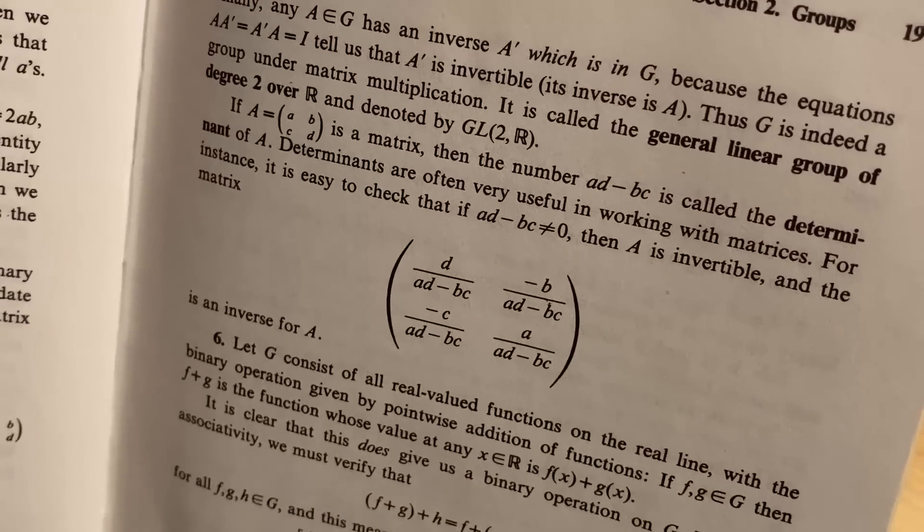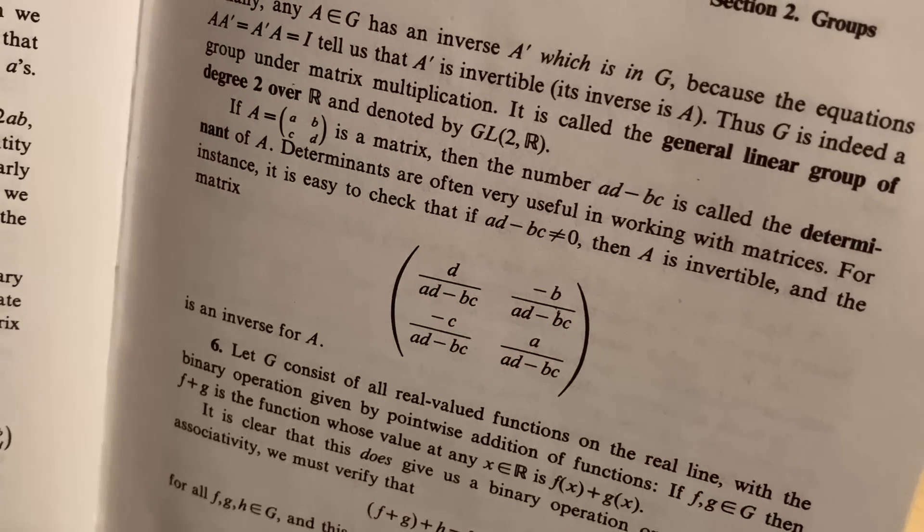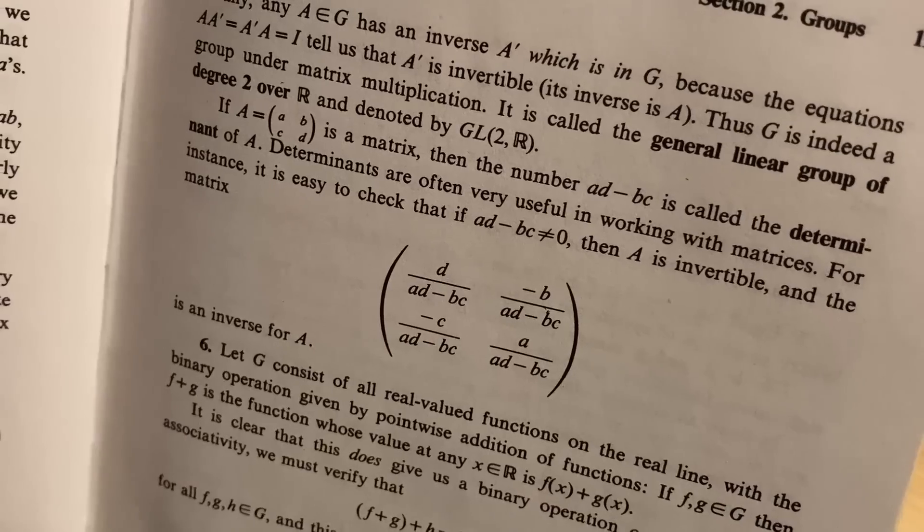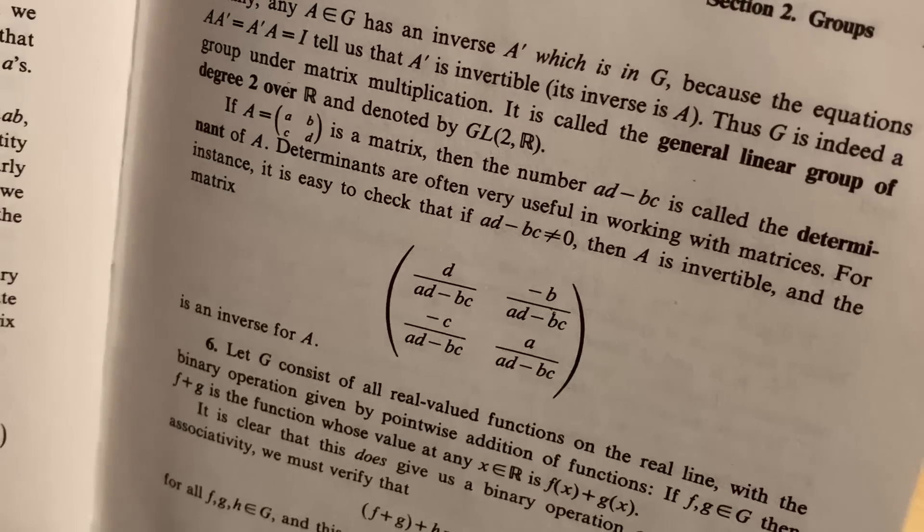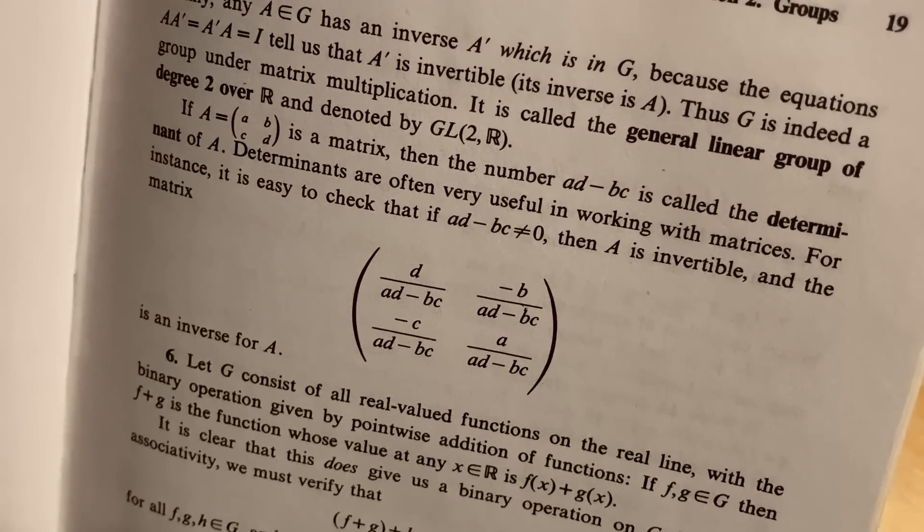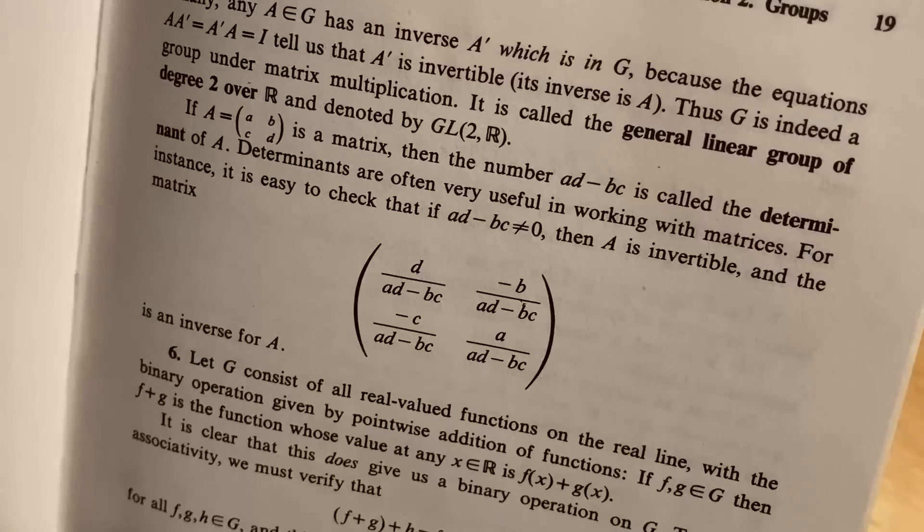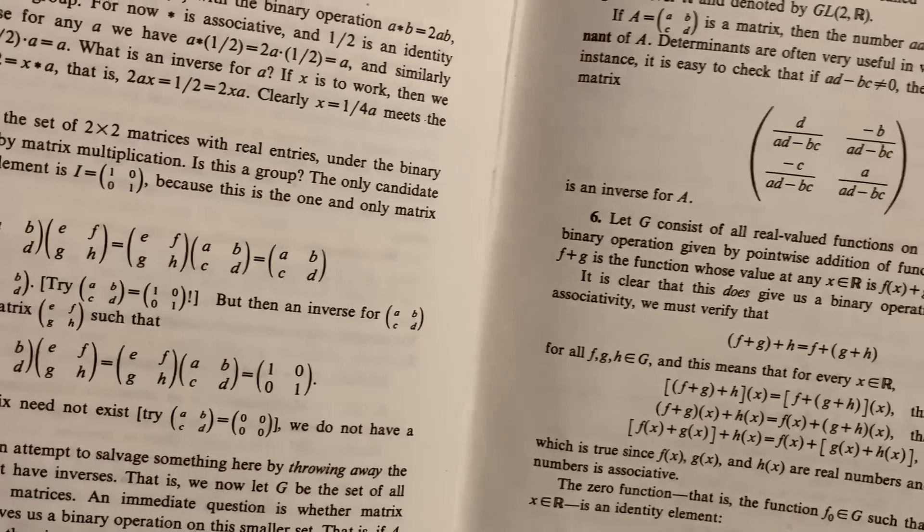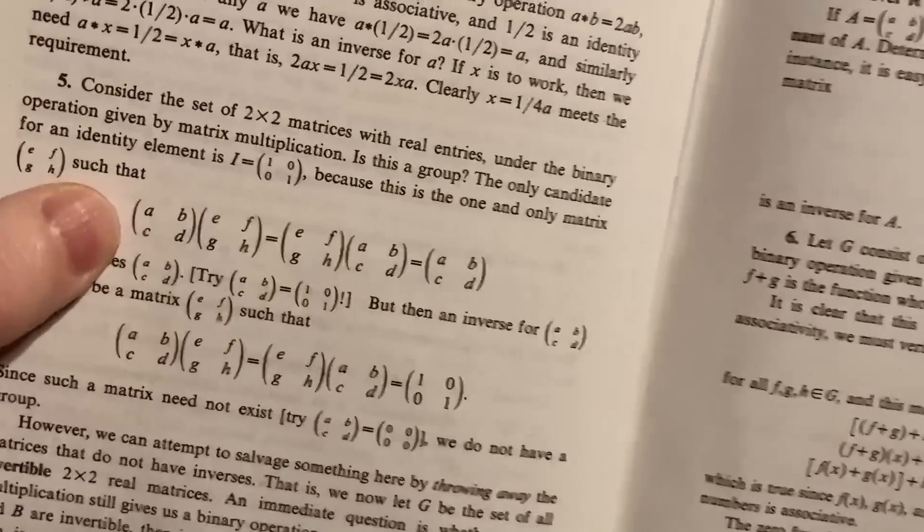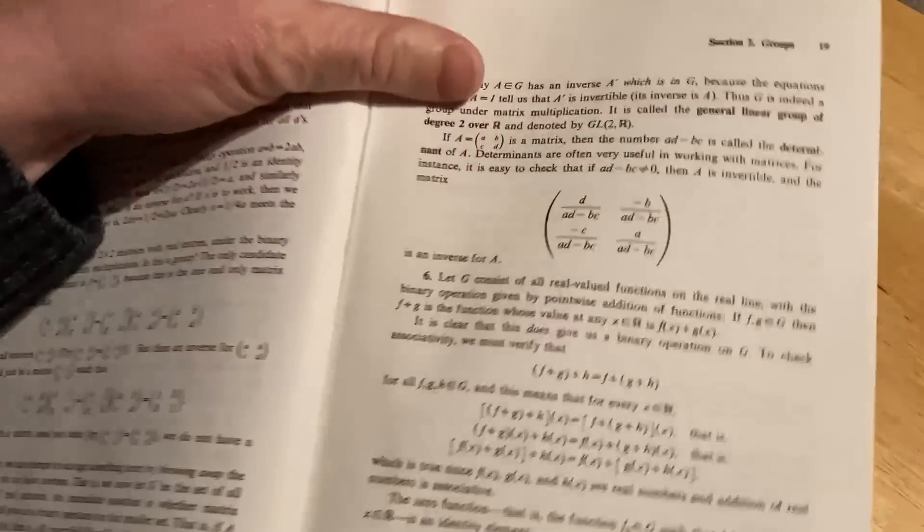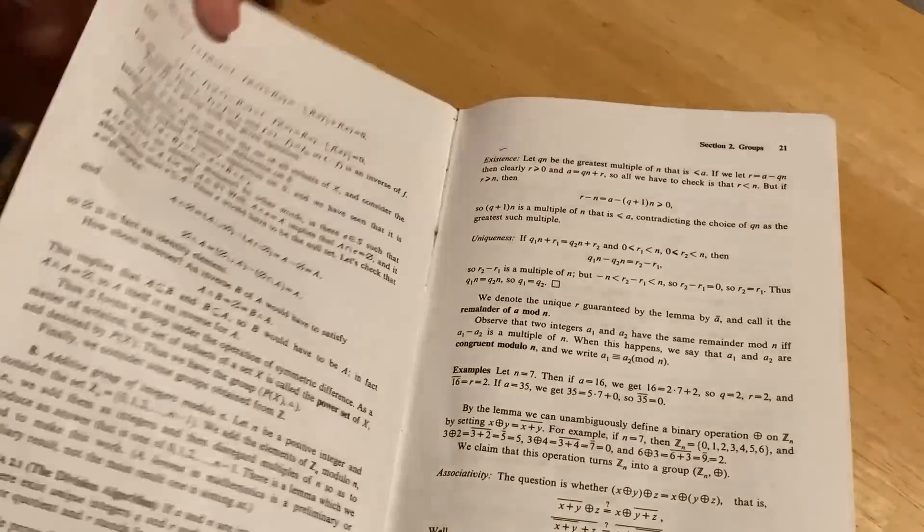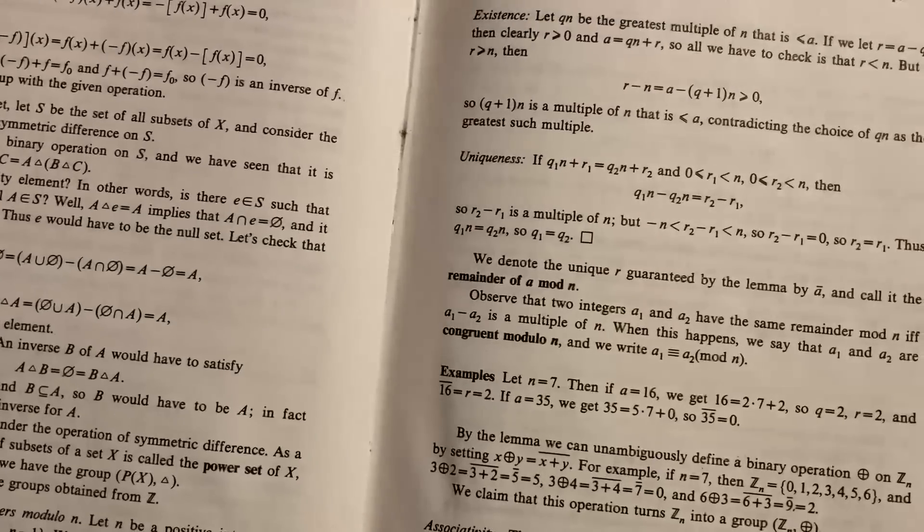Here it tells you it is called the general linear group of degree 2 over R and denoted by GL(2,R). You can use n instead of 2, so it works for any n. So you can look at other matrices. Right here we're looking at 2 by 2 matrices. So you can look at n by n matrices. It's really cool. And there's all kinds of good mathematics here.